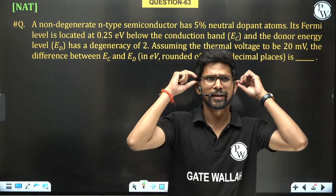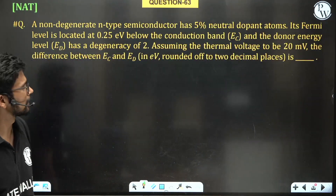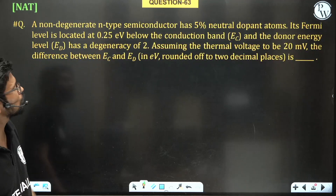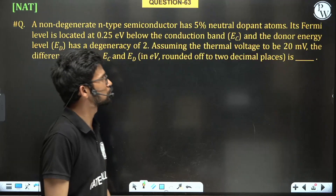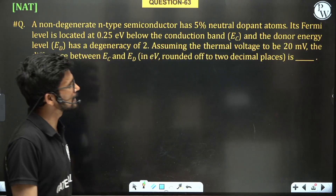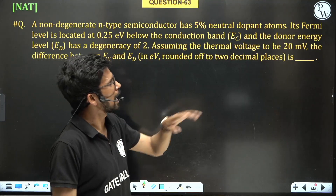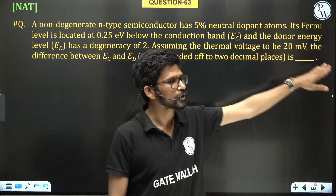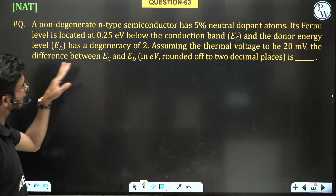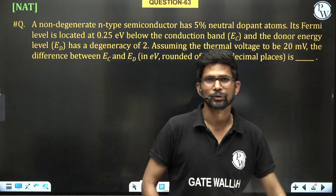A non-degenerate N-type semiconductor has 5 percent neutral dopant atoms. Its Fermi level is located at 0.25 electron volt below the conduction band EC, and the donor energy level ED has a degeneracy of 2. Assuming thermal voltage to be 20 millivolt, find the difference between EC and ED in electron volt rounded up to 2 decimal places.